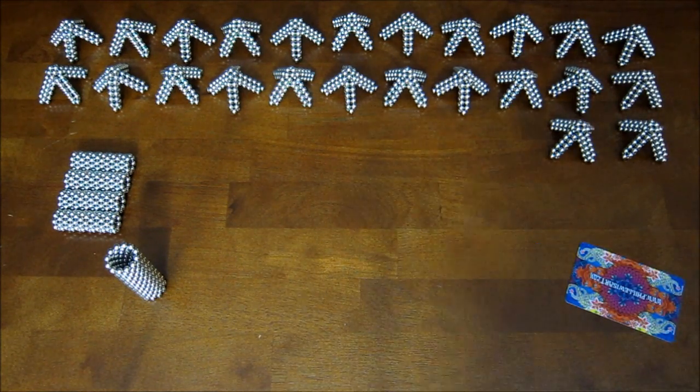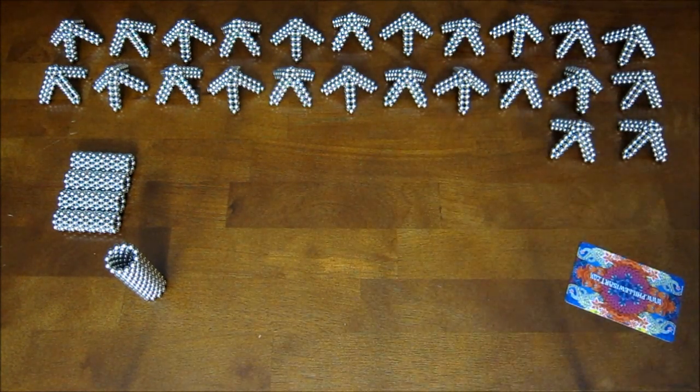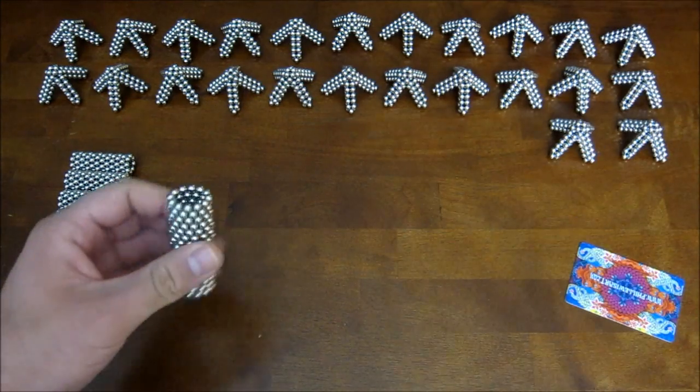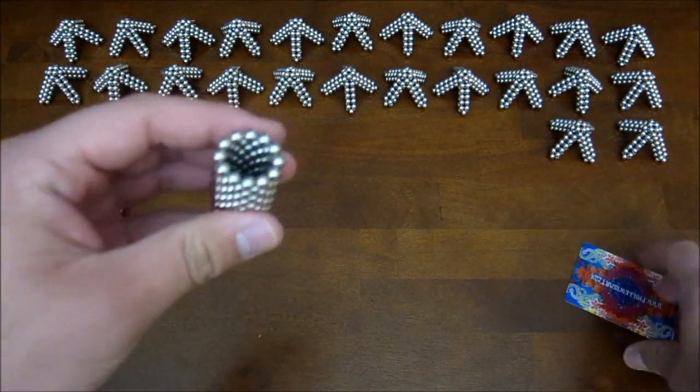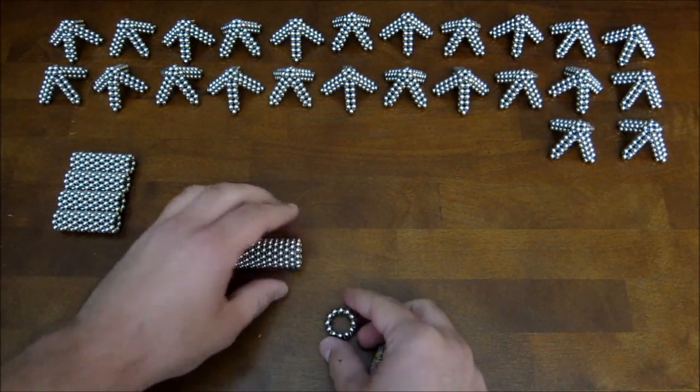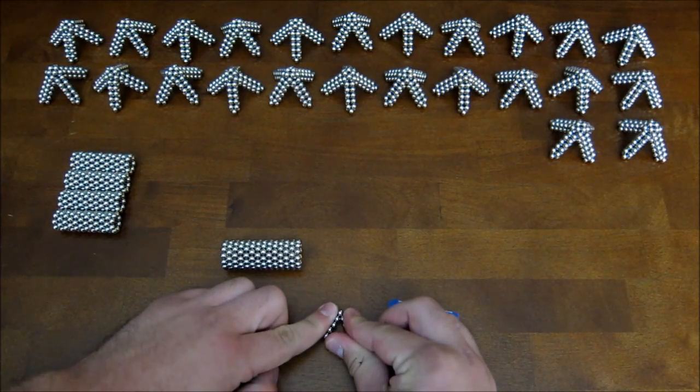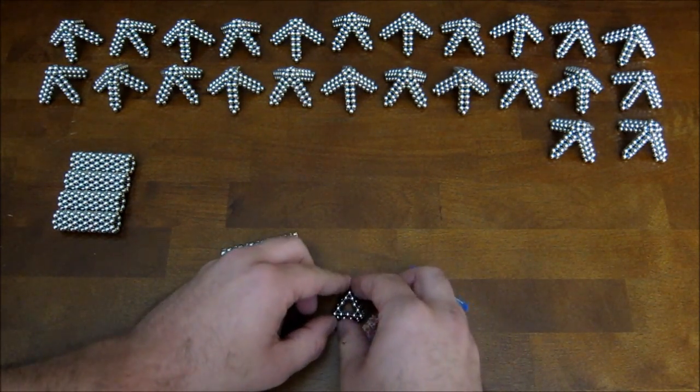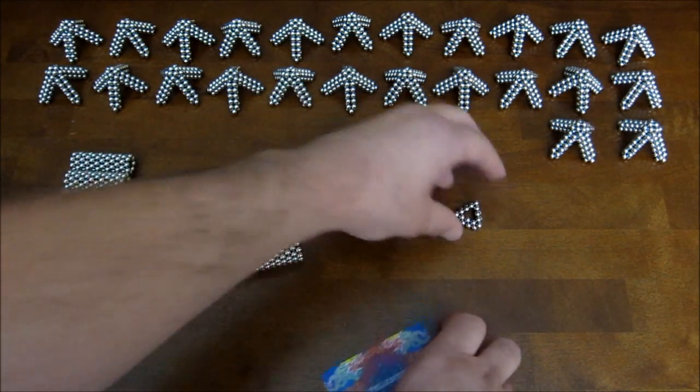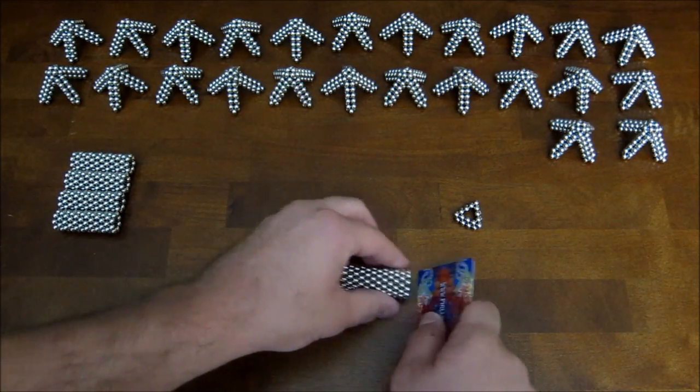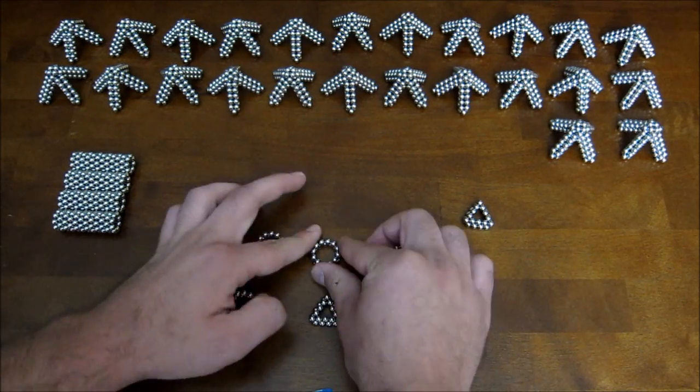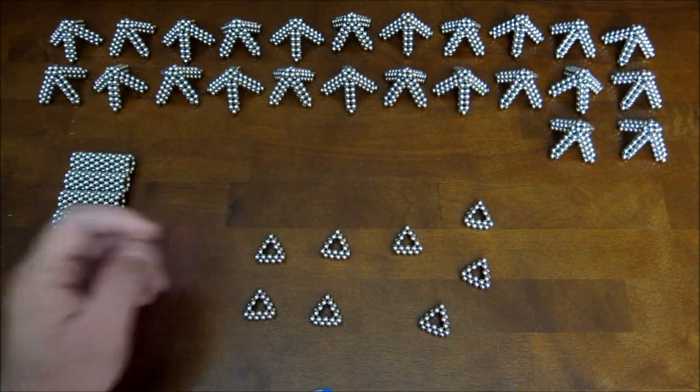So, now what you do to start assembling this thing is you take these 16 stacked rings of 12 and you cut them up into stacks of two. And you take each one of those short stacks and you pinch the top of it into a triangle like this. And you go ahead and do that, and you make eight of these pieces out of this.